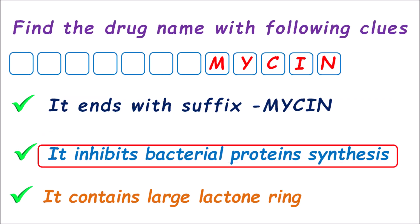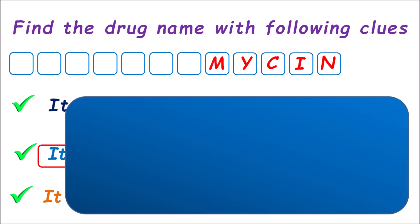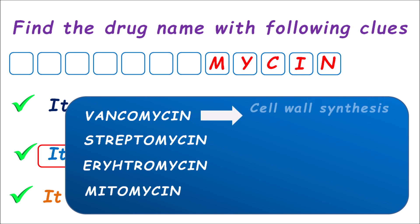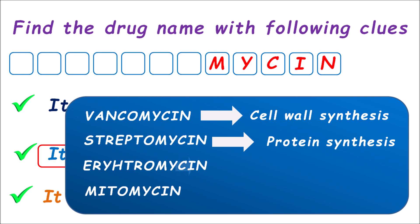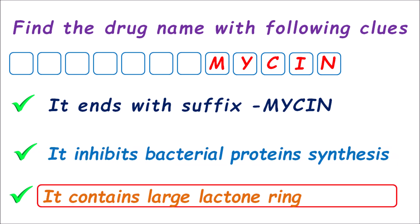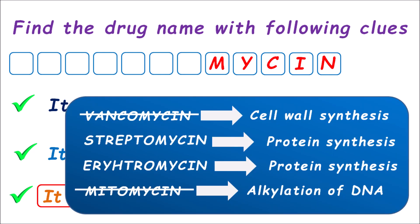Coming back to the puzzle: the second clue is it inhibits bacterial protein synthesis. Among our listed drugs — vancomycin, streptomycin, erythromycin, and mitomycin — vancomycin inhibits cell wall synthesis, streptomycin inhibits protein synthesis, erythromycin inhibits protein synthesis, but mitomycin is an anti-cancer agent that produces alkylation of DNA. So vancomycin and mitomycin are eliminated. For the third clue — it contains a large lactone ring — streptomycin belongs to the aminoglycosides with a glycoside ring and amine portion, so it is not the answer. But erythromycin is a macrolide with a large lactone ring, so erythromycin is the right answer.